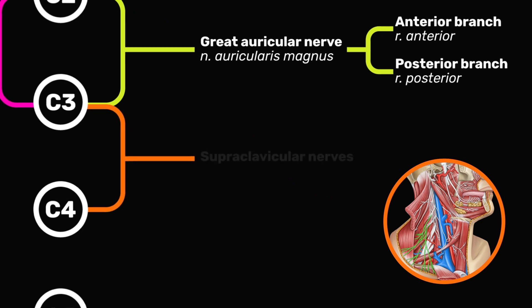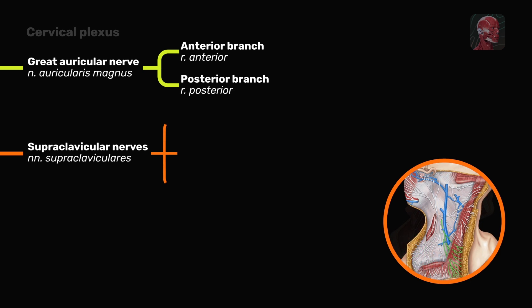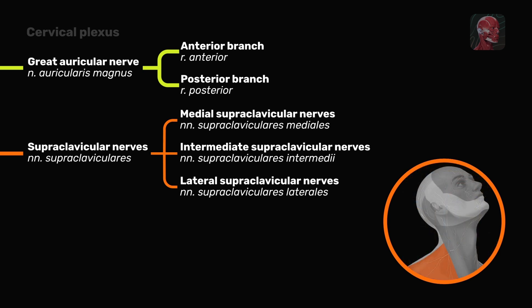Supraclavicular nerves arise from the loop between C3 and C4. They contain fibers from C3 and C4 and pass as a common trunk under the sternocleidomastoid muscle. This trunk then divides into medial, intermediate, and lateral supraclavicular nerves. These branches innervate the skin of the neck region and the skin over the shoulder.